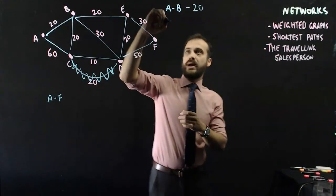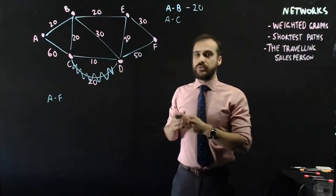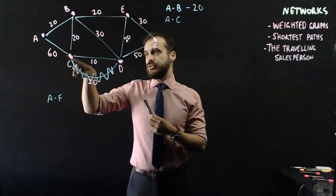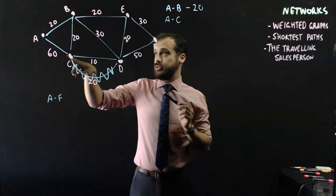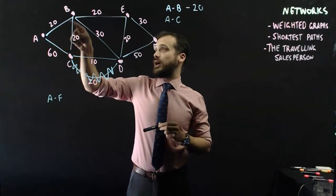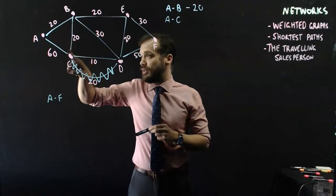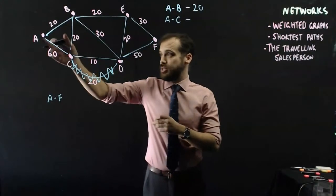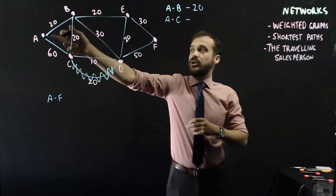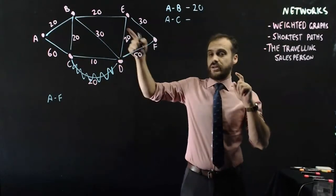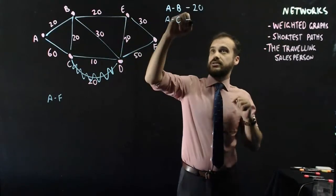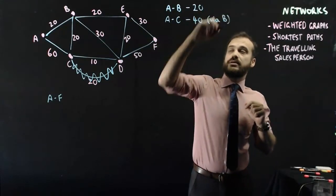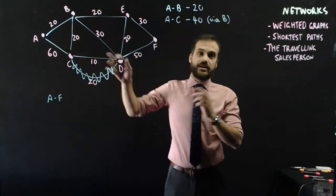Let's consider now from A to C. What's the best way to get from A to C? You could take this direct route, which is 60 kilometres, or you could go from A, B, and then B to C. So, the fastest way to get from A to C is not by taking the direct road, it's by going the short way around, A to B and B to C. So, I'm going to write 40 there, and I'm just going to write via B. So we know we're not going directly, we have to pass through B to do that.